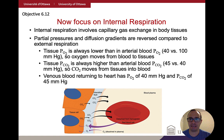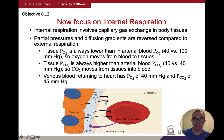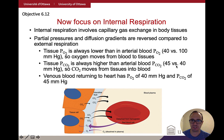Internal respiration is driven mostly by partial pressure gradients and the ability of gases to diffuse — oxygen diffuses less readily than CO2 into liquid. For CO2, in the tissues it's 45 mmHg, and in the bloodstream it's 40 mmHg, so CO2 moves from the tissues into the blood. Both external and internal respiration involve oxygen and CO2 traveling in opposite directions, driven by the partial pressure gradient and the diffusibility of those gases within liquid.